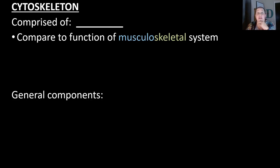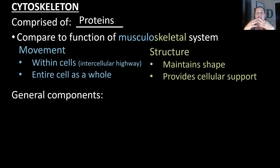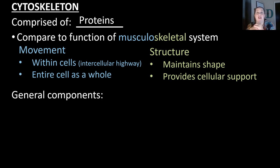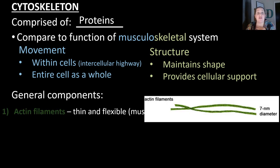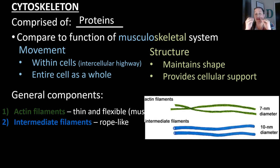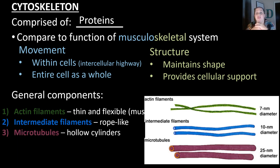Let's talk about the cytoskeleton. The cytoskeleton is composed of proteins and compares in function to your musculoskeletal system. The muscle part helps with movement within the cell — it acts like a highway inside the cell and can also help move the cell as a whole. The skeletal part gives structure, helping maintain the shape of the cell and providing support. The general components include actin filaments, which are very thin flexible filaments found in muscle cells; intermediate filaments, which are a little thicker and more rope-like; and microtubules, which are the largest but hollow on the inside. Microtubules are used in the flagella, the cilia, the centrioles, and similar structures.